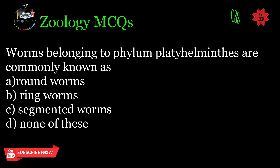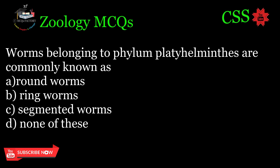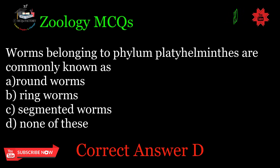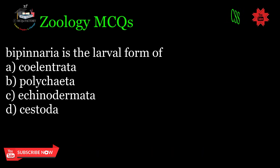Worms belonging to phylum Platyhelminthes are commonly known as: A. Round worms, B. Ring worms, C. Segmented worms, D. None of these. Correct answer: D.